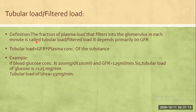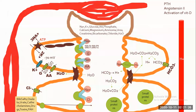This is the tubular load or filtered load. The definition is: the fraction of plasma load that filters into the glomerulus in each minute is called tubular load or filtered load. It depends primarily on GFR — meaning, we measure the substance that enters the glomerulus each minute.